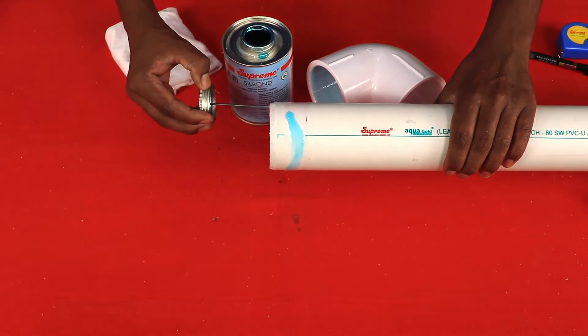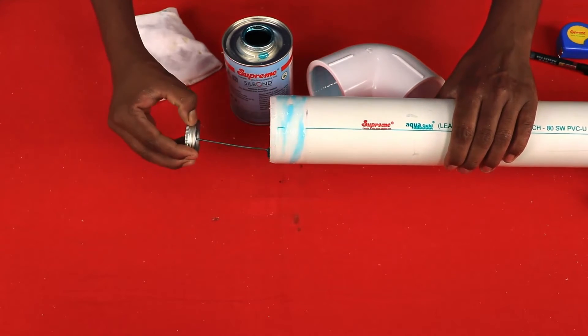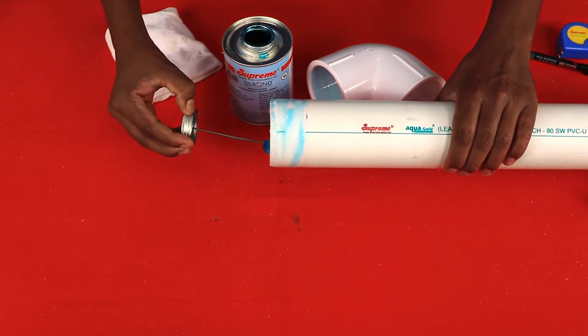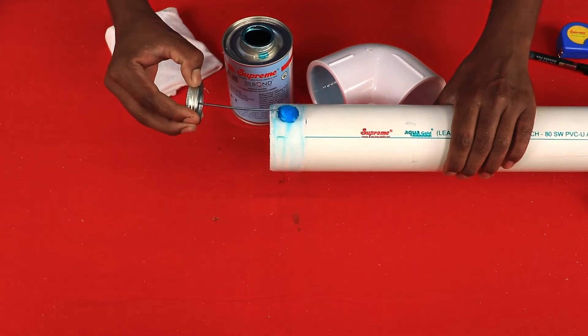Apply cement quickly to prevent it from drying and make sure to completely cover all jointing surface area of the pipe and fitting. Do not apply excessive cement in bell socket.